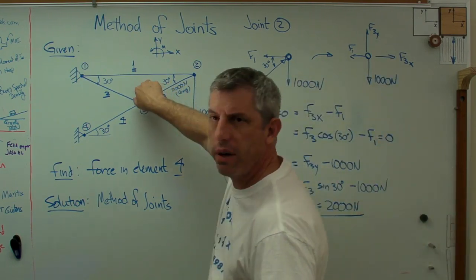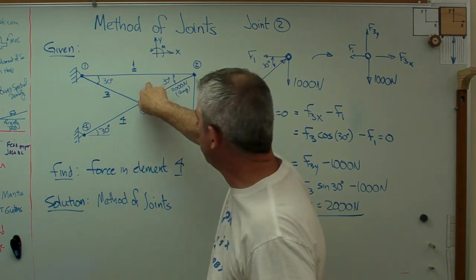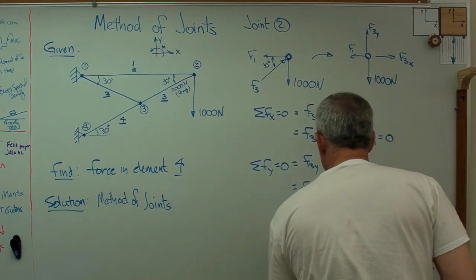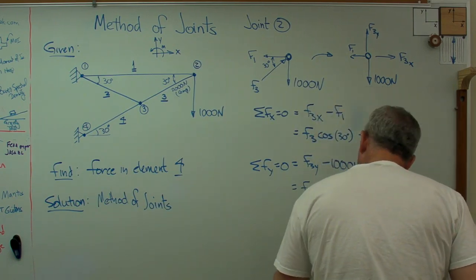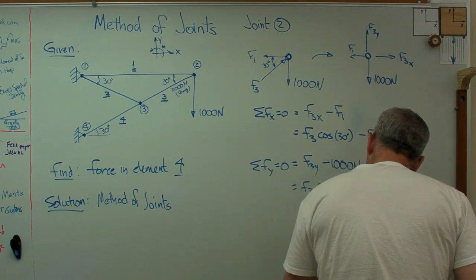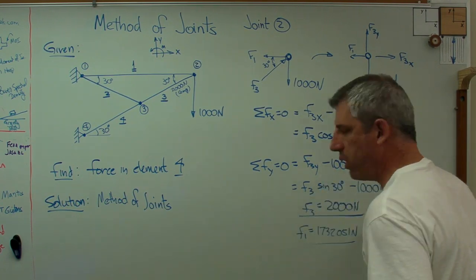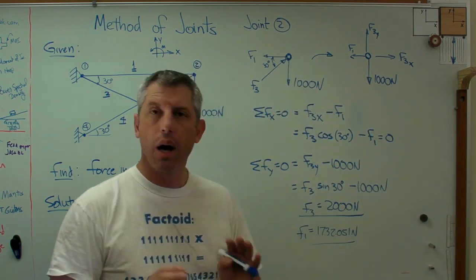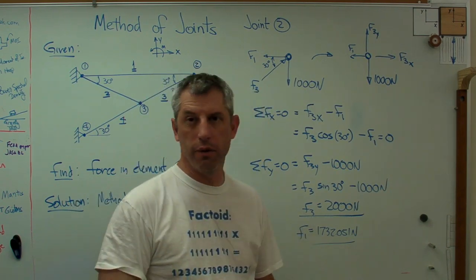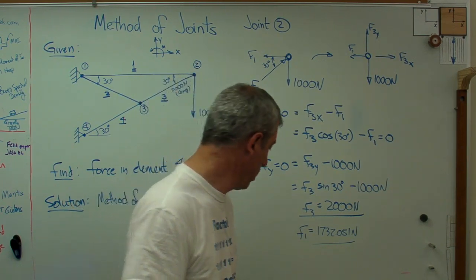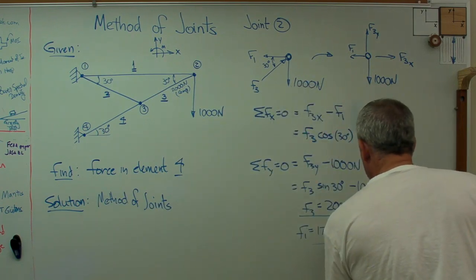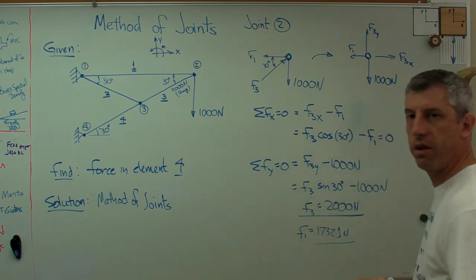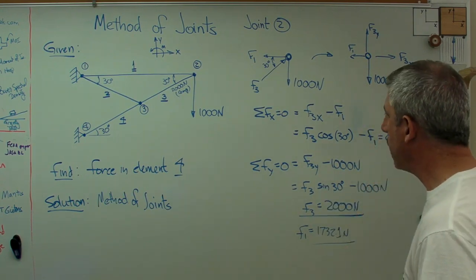Do I care what's going on in bar one? I really don't. I'm trying to get down to here, so I'm going to stop right there. Although if you want to calculate it out, you'll find that F1 equals 1732.051 newtons. Normally I wouldn't go to that many significant figures, but if you're doing this on your calculator, that's what you'll get. I normally tell my students to calculate to five significant figures and report the answers to three.